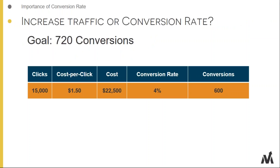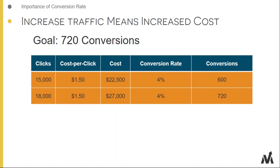Here's a simple table showing metrics from a PPC campaign: 15,000 clicks at a cost per click of $1.50 gives a cost of $22,500 per month. At a 4% conversion rate, you're generating about 600 conversions per month. If your goal is 720 conversions and you try to get there by increasing clicks, you'd increase spend to $27,000, generating 3,000 more clicks to reach 720 conversions.